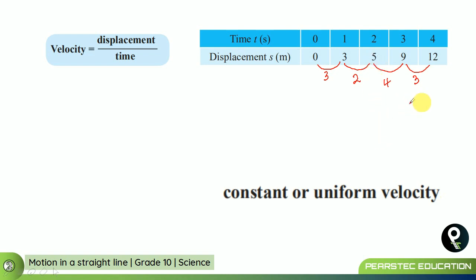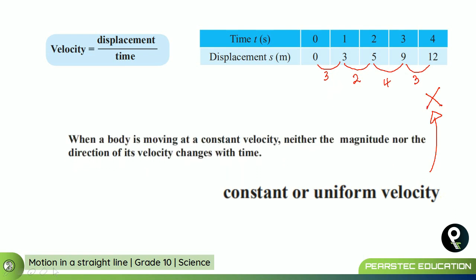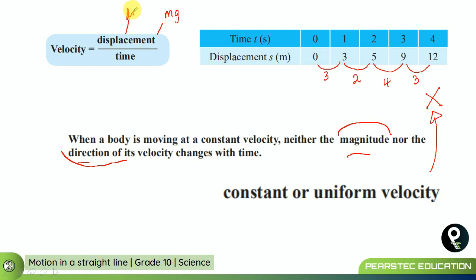Is this uniform? No, this particular one is not uniform. For uniform velocity, the displacement will be equal. And one more thing: when a body is moving at a constant velocity, neither the magnitude nor the direction of its velocity changes with time. As displacement is considered, it has magnitude and direction — both of these will not change when there is a constant velocity.